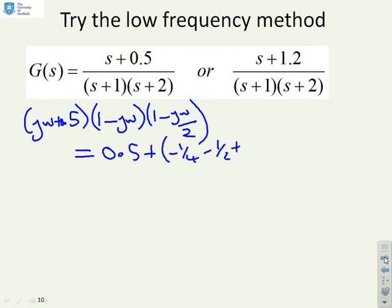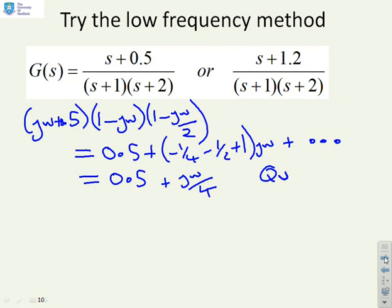Then I can simplify this to 0.5 plus jω/4, and clearly this is in quadrant 1.